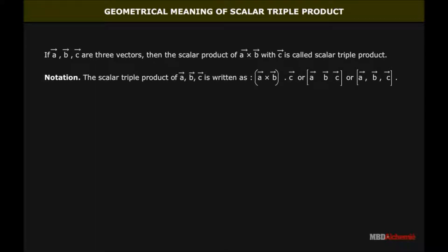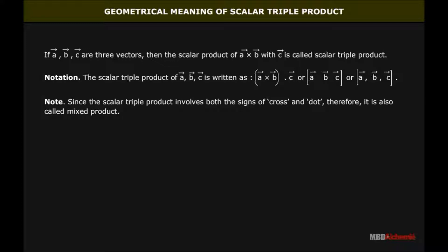Notation: The scalar triple product of vector A, vector B, vector C is written as shown here. Note: since the scalar triple product involves both the signs of cross and dot, therefore it is also called the mixed product.